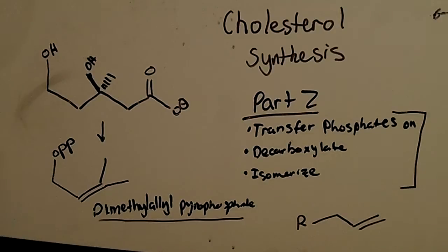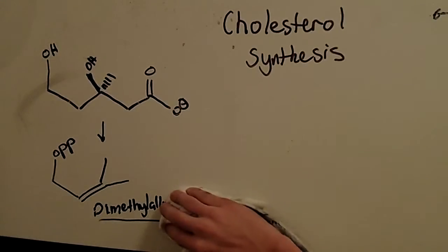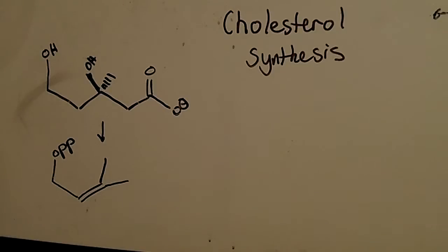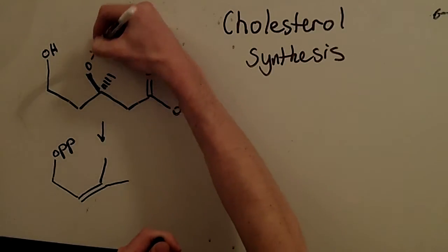Okay, so let's look at the transfer of the phosphates on to start off. So we left off with mevalonate. It's there. Let's transfer some phosphates on there. We transfer a phosphate on here, for example.